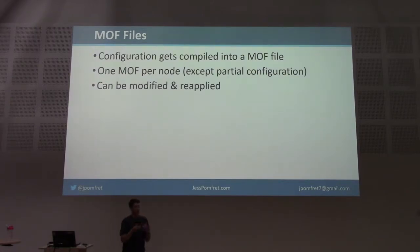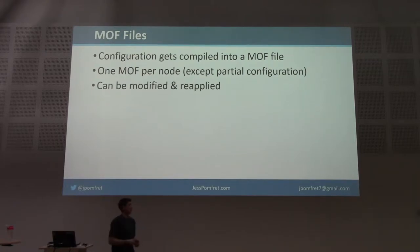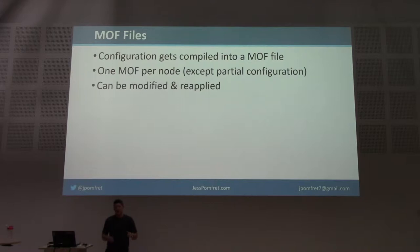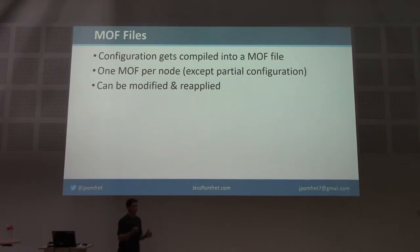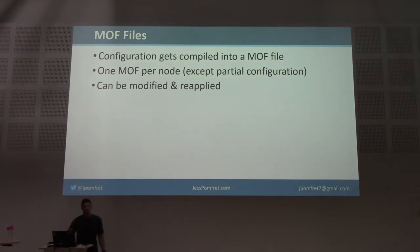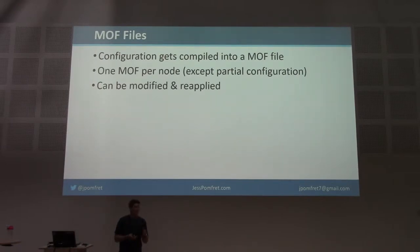Once we've got our configuration in human-readable format, it needs to be compiled into a MOF file. The MOF file is what is actually sent out to the target node, and it's compiled by running that configuration. There's one MOF per node — though there is something called partial configurations, and the internet suggests it's more trouble than it's worth. It seems like a cool idea where your Windows team and your DBA team could each push a partial configuration that merges together, but they don't always go that way. So let's do one MOF per node, then modify and reapply them — that idempotent idea of making incremental changes.